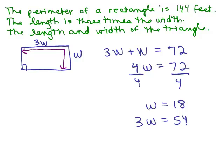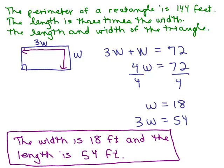3W will still be 54. And my answer will be exactly the same. The width is still 18 feet and the length is still 54 feet. It just gives you multiple ways to solve the same problem.